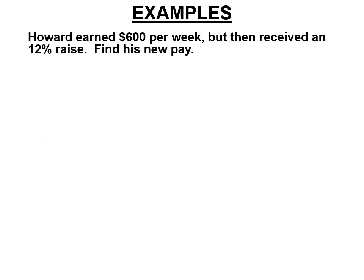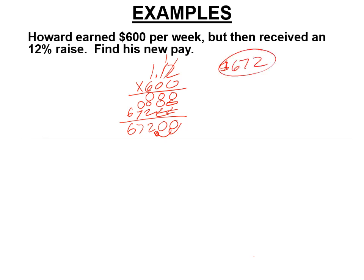So Howard earned $600 per week but then received a 12% raise. Find his new pay. So if he has a 12% raise, that means he's now making 112% or 1.12% of what he used to make. So we have to multiply that times $600. We're going to get a bunch of rows of zeros doing this. So now, third row, I'm finally multiplying by the 6. 6 times 2 is 12. Carry the 1. 6 plus 1 is 7. 6 times 1 is 6. 0, 0, 2, 7, 6. Move the decimal twice, he's now going to be making $672, 12% more than he made before.